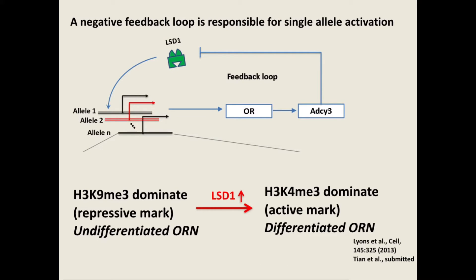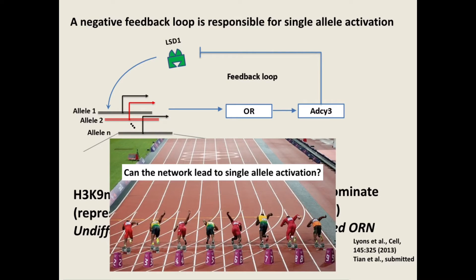This diagram summarizes what we know after decades of studies. Each cell has many OR alleles, and we can simply treat all alleles equally. Each allele has a number of nucleosomes, on which most of the histones have H3K9 trimethylation before differentiation. When differentiation happens, a neuron transiently upregulates the level of LSD1, which is a demethylase that can remove methyl groups from histones. Then, when an allele becomes dominated by H3K4 trimethylation and becomes transcriptionally active, the produced OR proteins elicit an active feedback loop mediated by another enzyme AD-spy3 and induce LSD1 degradation to prevent other alleles from being activated. So it's like a race. But how can this network lead to a single winner?